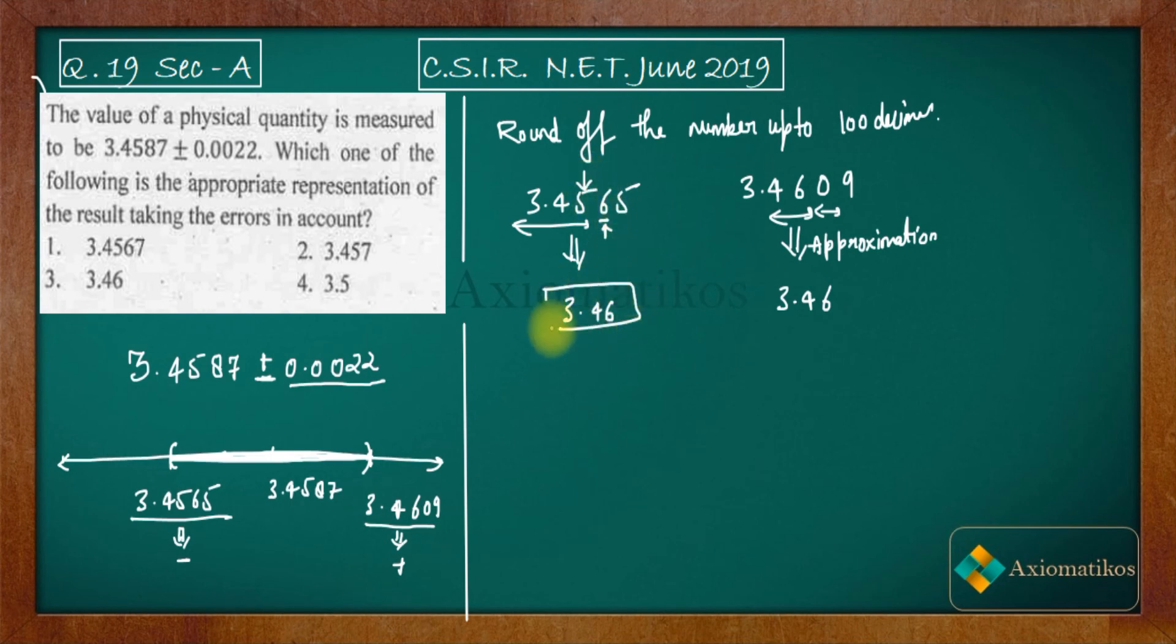So 3.46 is the rounded value of this. After rounding off, the measurement for this problem is 3.46. It means that the third option is correct. So this is how one can solve this problem.